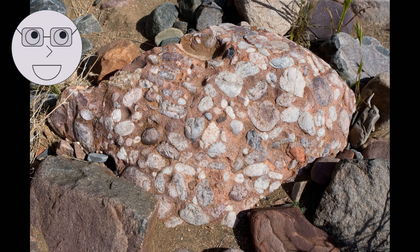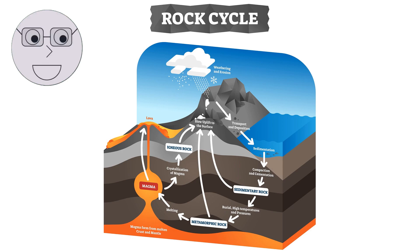Let's start by exploring the chemistry of igneous rocks. Igneous rocks are formed from the solidification of molten magma or lava. The chemical composition of igneous rocks is determined by the original composition of the magma or lava, as well as the conditions under which it solidified.